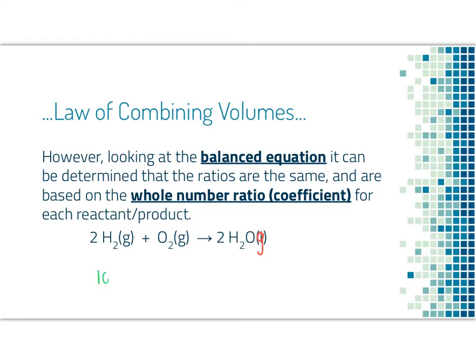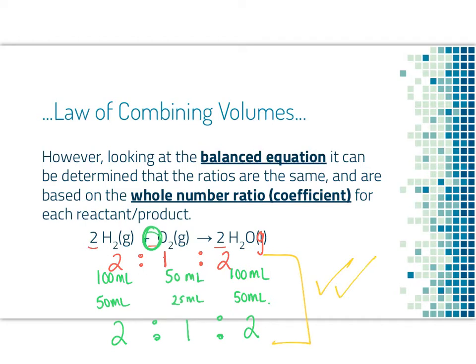Remember, our volumes were 100 to 50 to 100 and 50 to 25 to 50. If we look at our coefficients here, this is a two to one. Remember, no coefficient means one to two. Again, no coefficient means there's only one. Now remember, our ratio for our volumes was two to one to two. Because these match, they were like, hey, the volumes required to react or the volumes of gases produced are based on the ratio found from our balanced chemical equation.